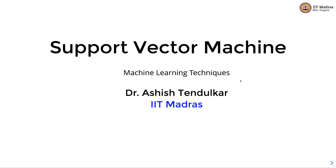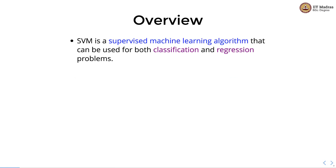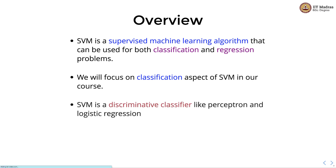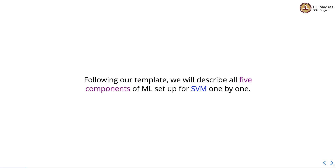Namaste! Welcome to the next video of the Machine Learning Techniques course. In this video we'll study support vector machines. Support vector machine is a supervised machine learning algorithm that can be used for both classification and regression problems. We'll focus on the classification aspect of SVM in our course. SVM is a discriminative classifier like perceptron and logistic regression, and it works in both binary and multi-class classification setups. Following our template, we'll describe all five components of the ML setup for SVM one by one.